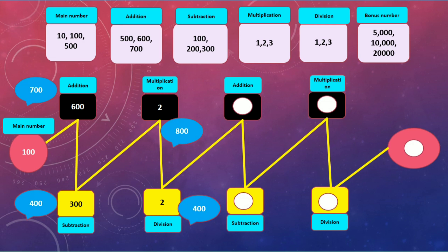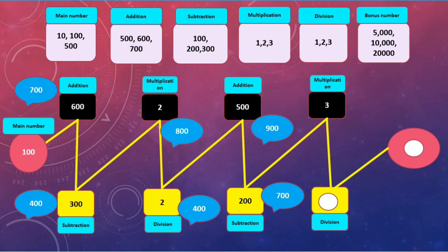What is my next stage? Again addition. If I select 500 from the addition bowl, 400 plus 500 is equal to 900, which is my total score. The next stage is again subtraction. If I take 200 from the subtraction bowl, 900 minus 200 is equal to 700. Now my total score is 700. My next stage is again multiplication. If my total score is 700 and I select 3, 700 times 3 is equal to 2,100. My next stage is division. If I select 3 from the division bowl, 2,100 divided by 3 is equal to 700. Now 700 is my total score.